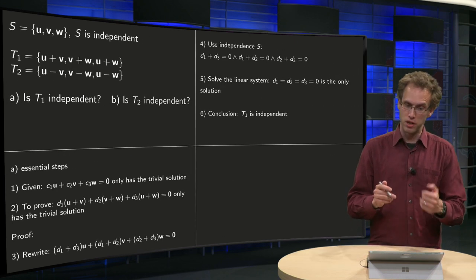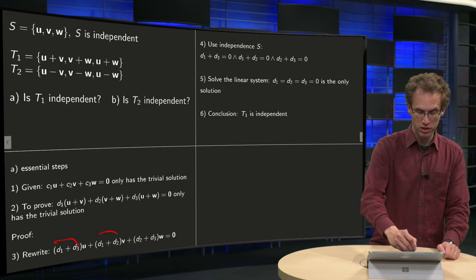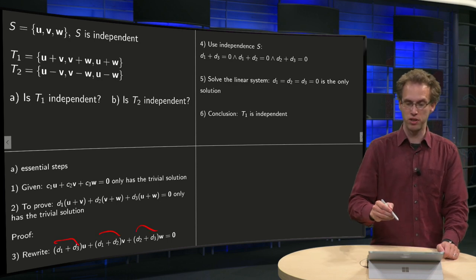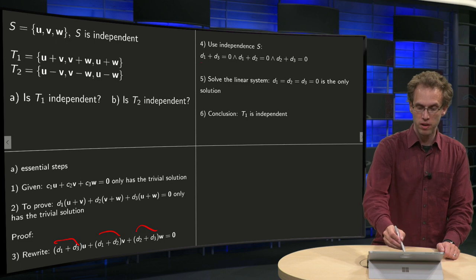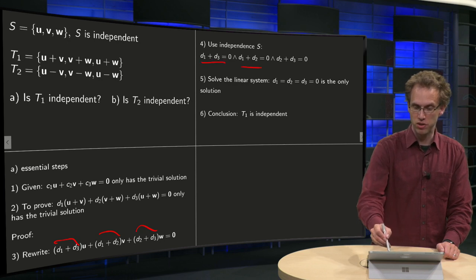So we use this independence to find that this scalar has to be zero, this scalar has to be zero and this scalar has to be zero, or that this equals zero, that equals zero and that equals zero.